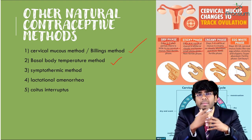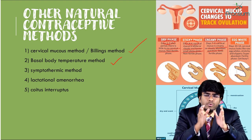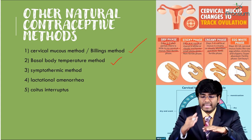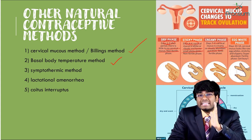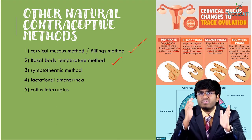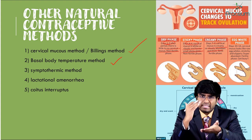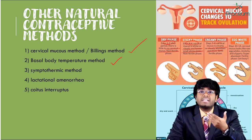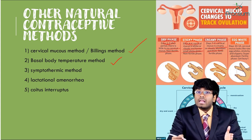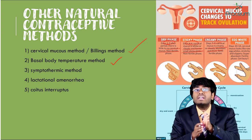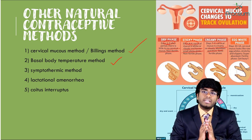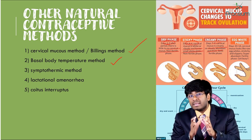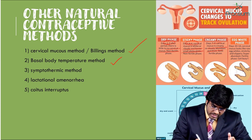The basal body temperature method is based on the fact that during the time of ovulation, there is an increase in basal body temperature by 0.5 to 1 degree centigrade. A female should not participate in intercourse from day 1 until she notices a raise in body temperature of 1 degree centigrade. She should take her basal body temperature every day. For example, on day 14 if there is an increase, she avoids intercourse for the next 2–3 days, after which sexual activity is allowed.